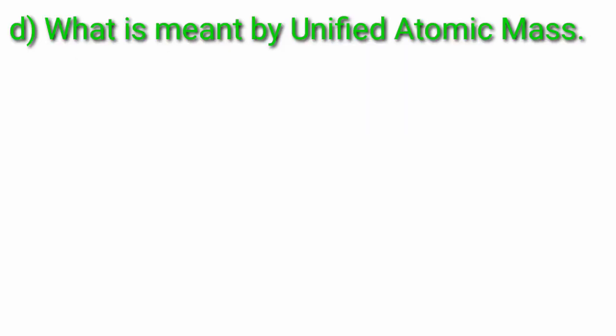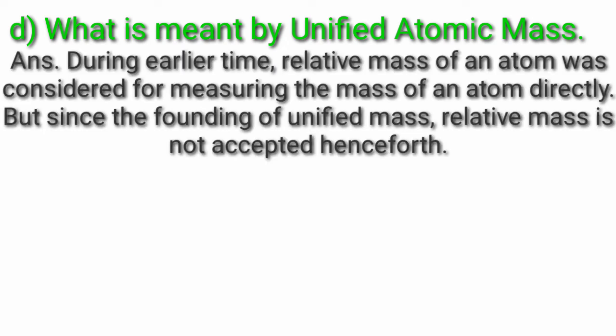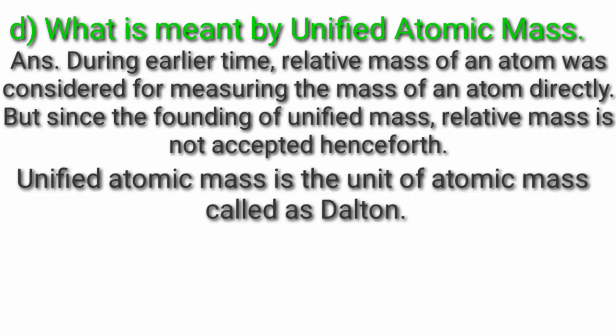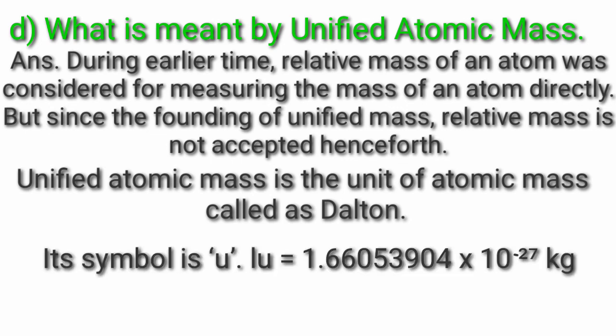Question 4D: What is meant by unified atomic mass? Answer: During earlier times, relative mass of an atom was considered for measuring atomic mass. But since the founding of unified mass, relative mass is not accepted. Henceforth, unified atomic mass is the unit of atomic mass, called the dalton. Its symbol is U. 1 dalton is equal to 1.66 × 10^−27 kg.